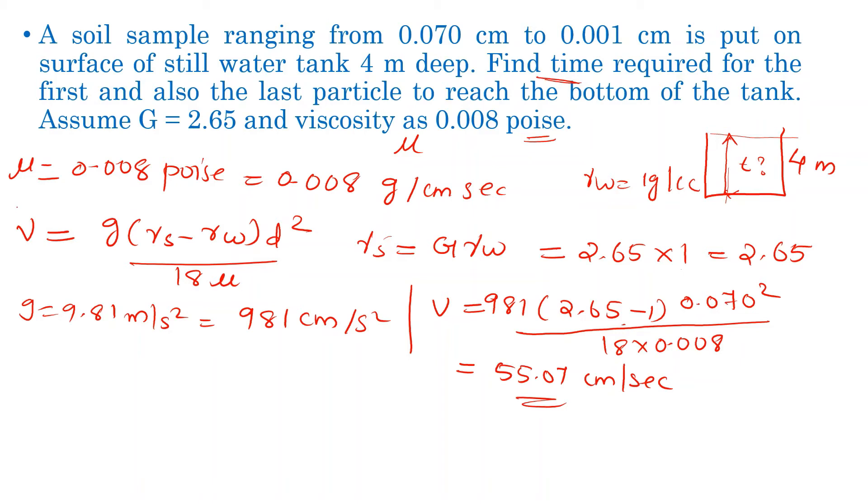The settling velocity of the 0.070 cm particle works out to 55.07 centimeters per second.